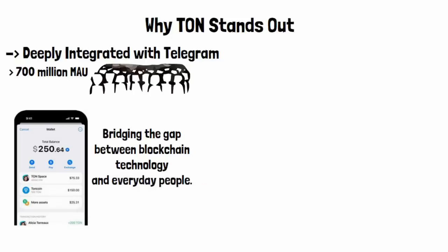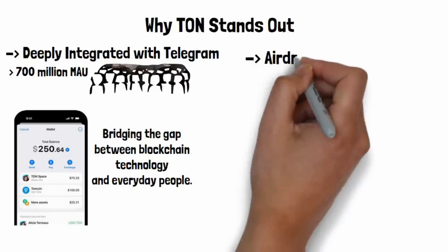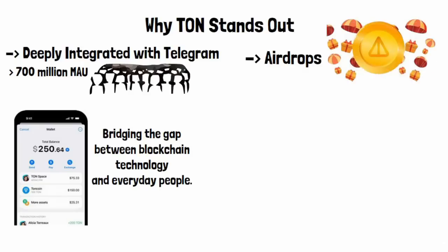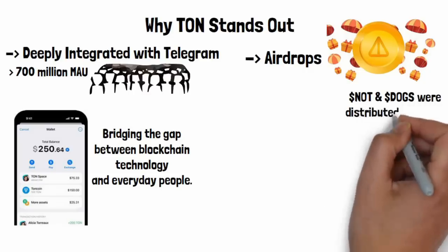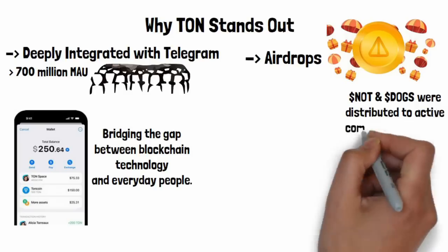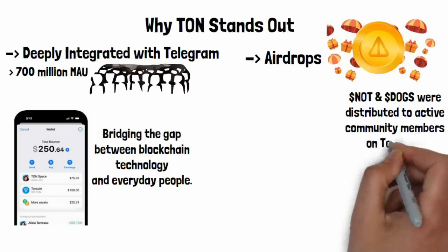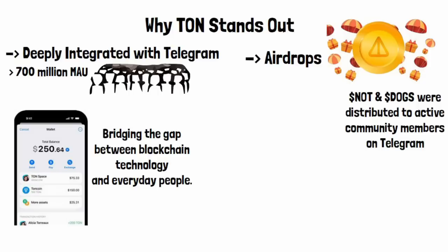This kind of user-friendly approach can bridge the gap between blockchain technology and everyday people. Another standout example is airdrops — a popular method in the crypto world for distributing tokens directly to users. Take Notcoin and Dogs, two notable projects on Telegram, which showcase how airdrops can seamlessly integrate with decentralized platforms. Both tokens were distributed via airdrops to active community members on Telegram, providing a great incentive for engagement.